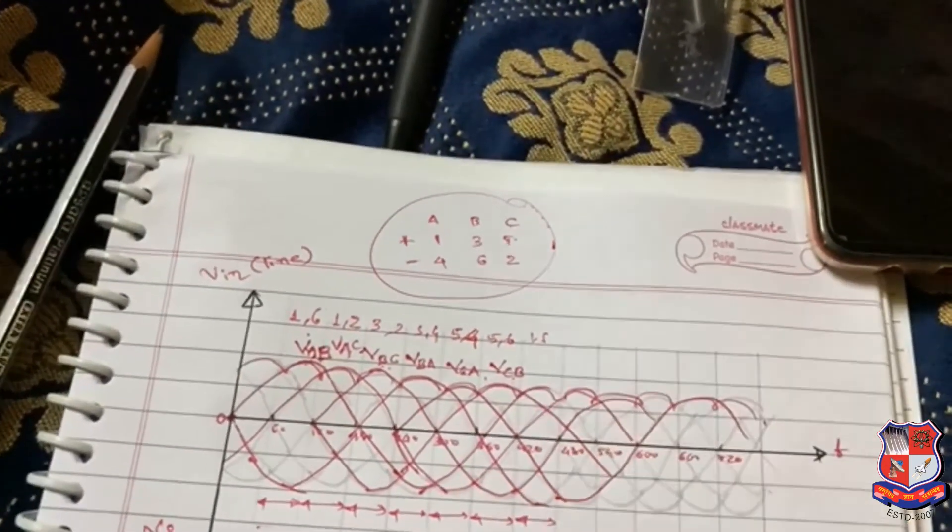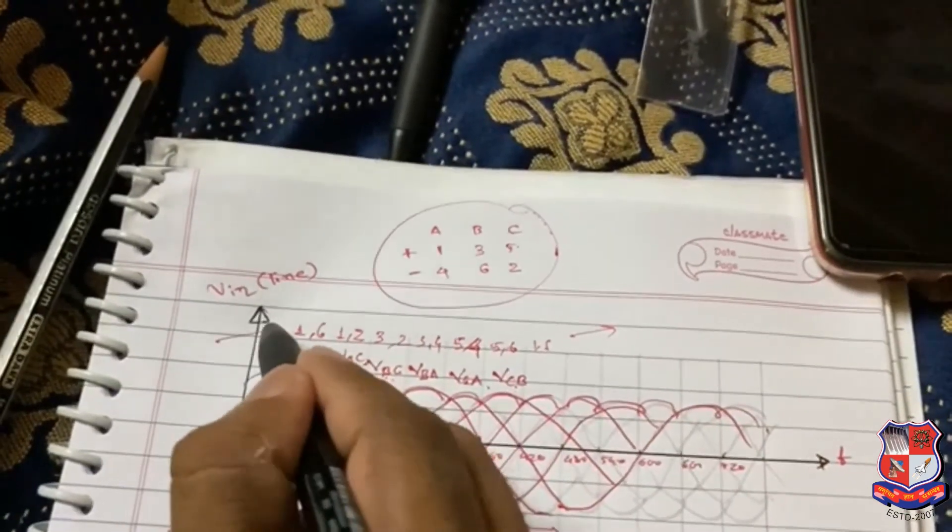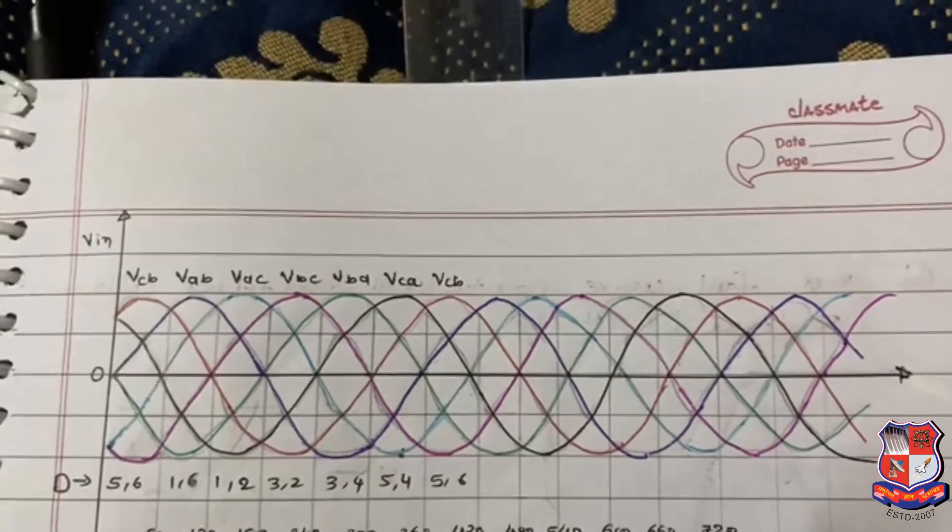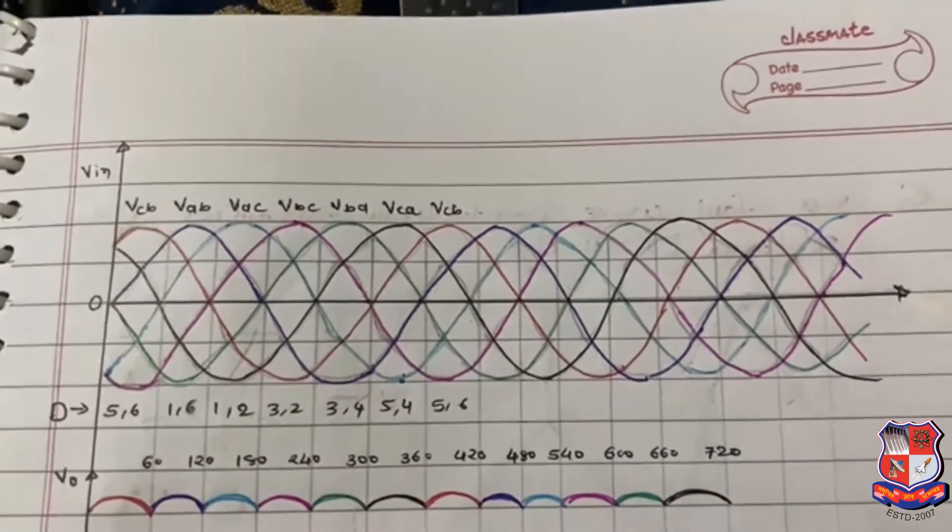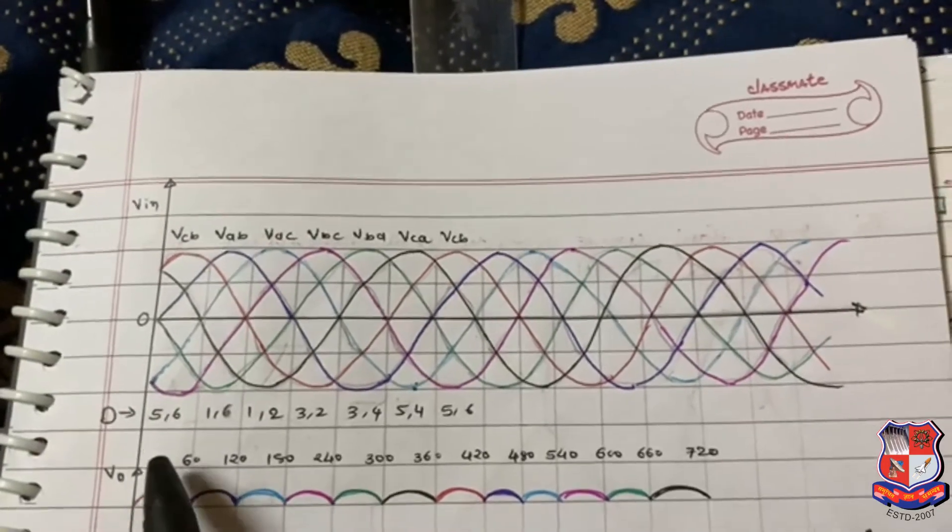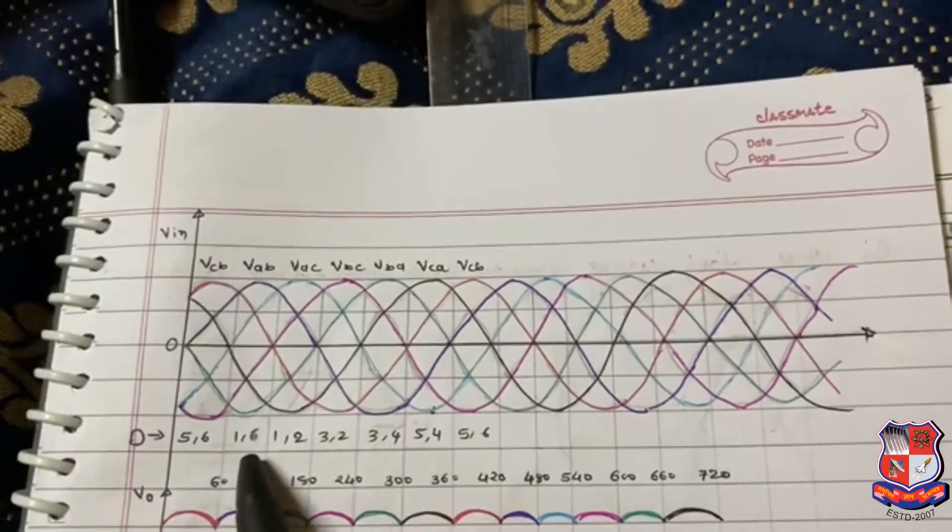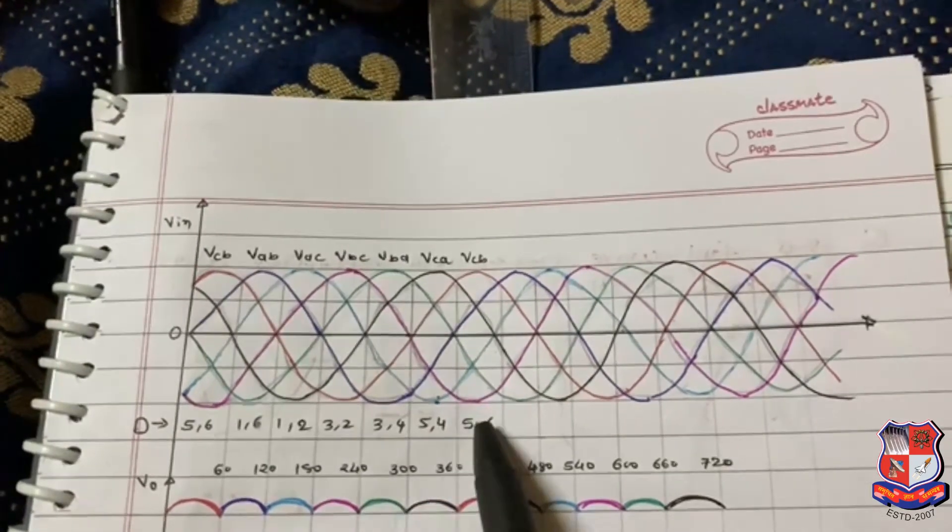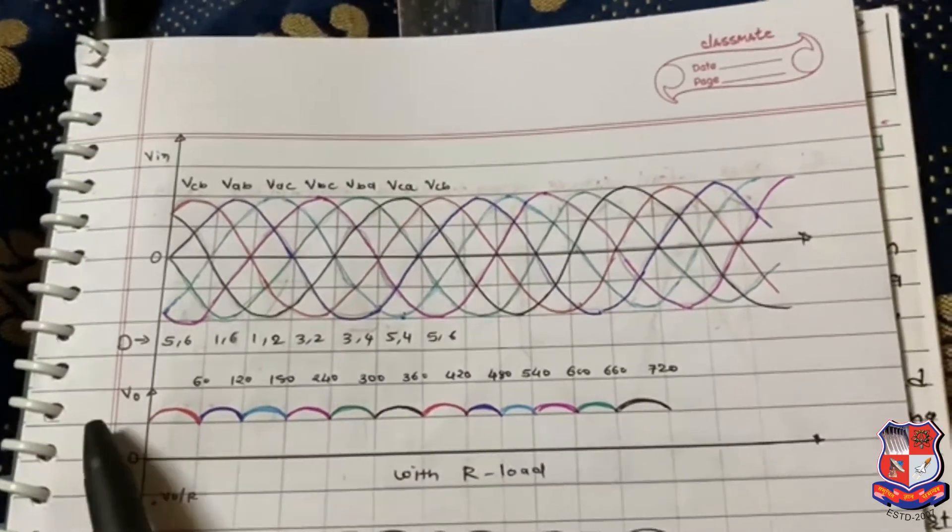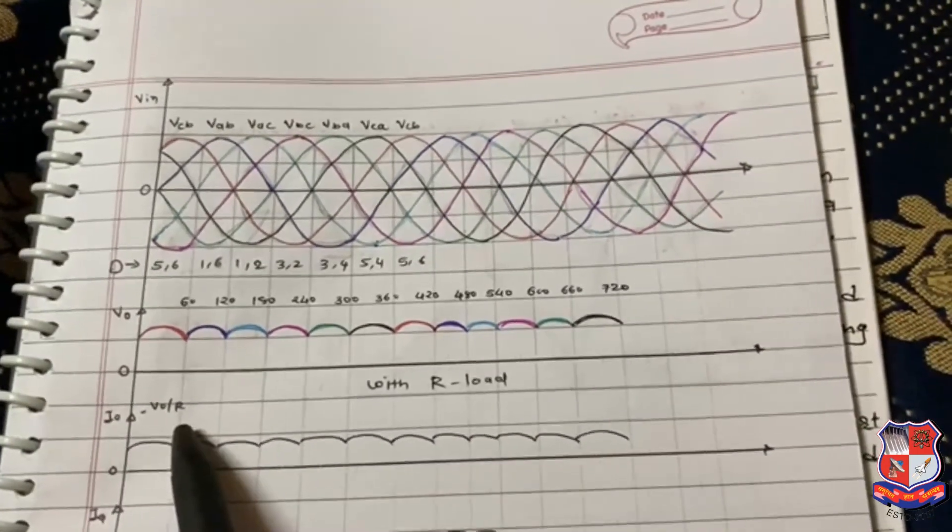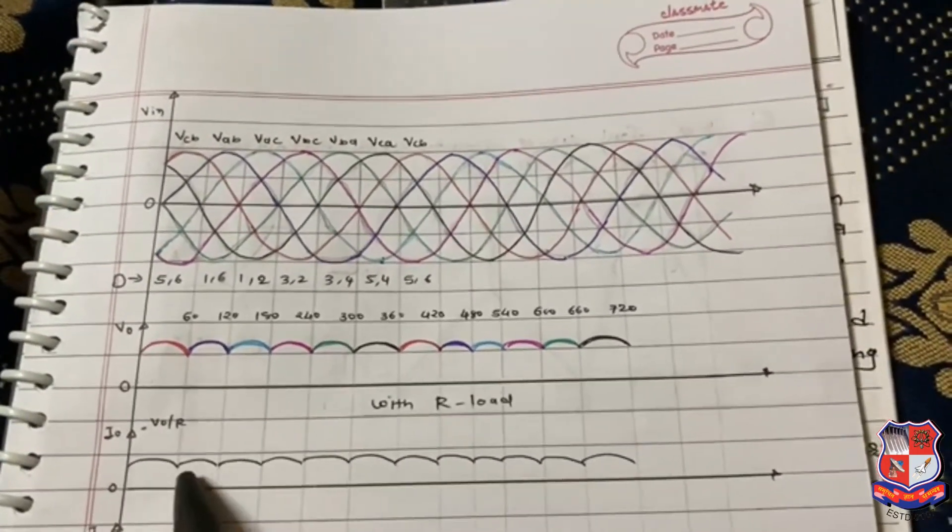So this is the input voltage for our three-phase full wave rectifier. This is the diodes for on condition for particular 60 degree intervals. This is our output voltage V0. This is the current with R load.